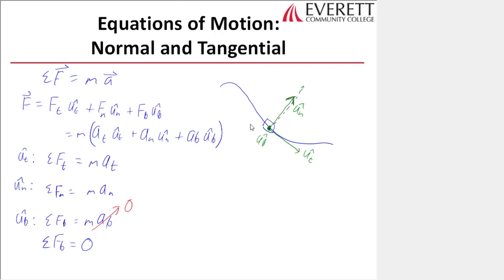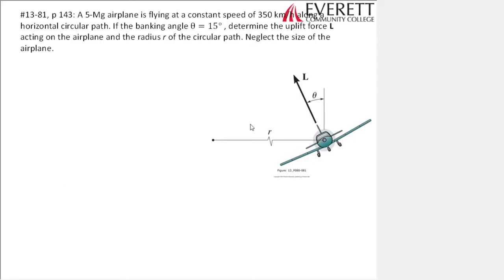Let's do example problem 13-81. A five-megagram airplane is flying at a constant speed of 350 kilometers per hour along a horizontal circular path. If the banking angle theta equals 15 degrees, determine the uplift force L acting on the airplane and the radius R of the circular path. The mass of the airplane is five megagrams, which is 5,000 kilograms.